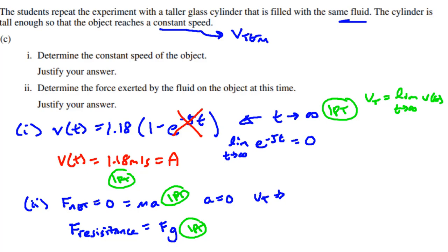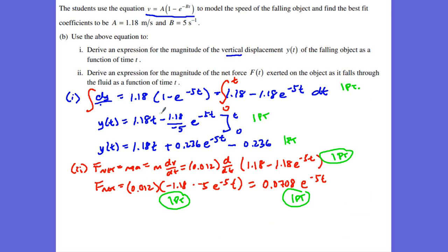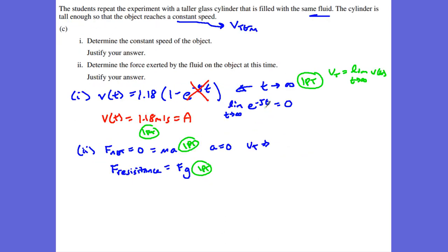Let's review our 15 points on this problem. One point for A1. Two points for A2: downward, and the magnitude is decreasing. Number three is worth two points: one for setting up the slope, one for calculating the slope. B1 is worth three points: one for setting up the integral, one for doing the integral, one for cleaning it up. B2 is worth three points: one for setting up the derivative, one for doing the derivative, one for cleaning it up. C1 is worth two points: one for time approaching infinity, one for the terminal velocity answer. C2 is worth two points: one for net force equals 0, and one for resistance equal and opposite to gravity.